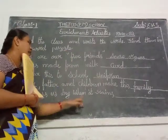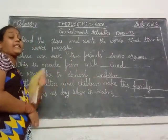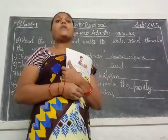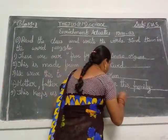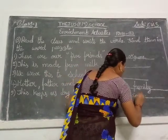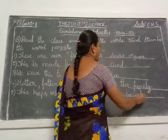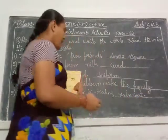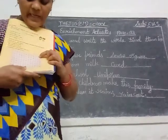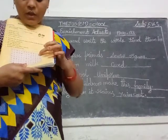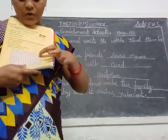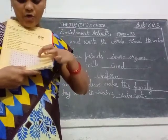Next clue says: this keeps us dry when it rains. Which one do you wear when it rains? Raincoat. So write here — raincoat. R-A-I-N-C-O-A-T. And here in the second letter, R going downstream — R-A-I-N-C-O-A-T. So you circle that word — raincoat.